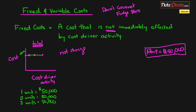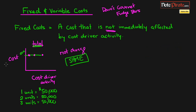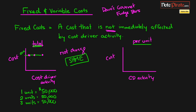So total fixed costs do not change — the fixed cost stays the same with respect to total costs, as I've outlined here. Now if we look at per unit costs, let me draw out another graph with cost driver activity on the x-axis and cost on the y-axis. We're still talking about the fifty thousand dollars of rent. If we have one unit, the per unit cost is still fifty thousand dollars because the fixed expense isn't being split over any other units.